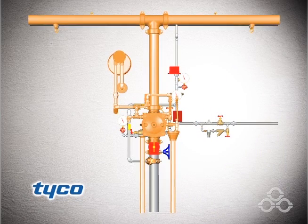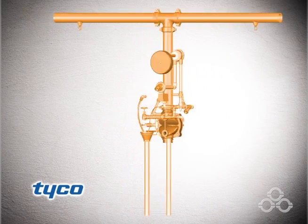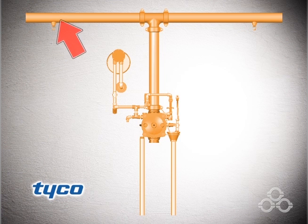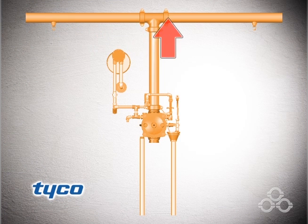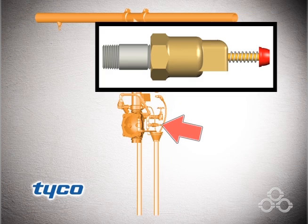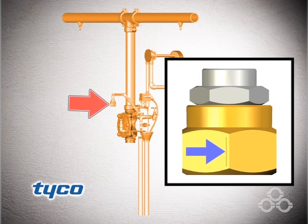The system is open to atmosphere in the location shown here in orange. This includes the system piping with open sprinklers or nozzles, the alarm trim, Model AD-1 automatic drain valve, and the Model ASV-1 automatic shut-off valve pilot chamber.